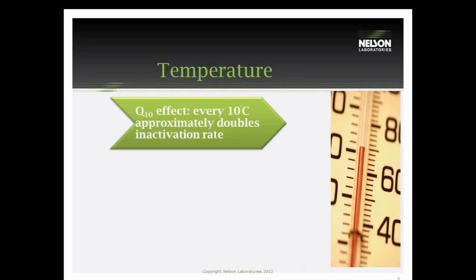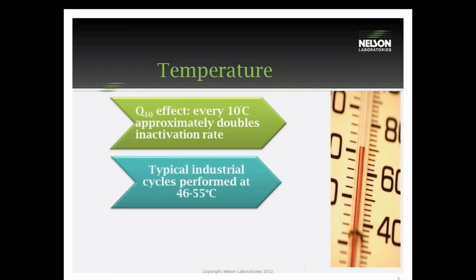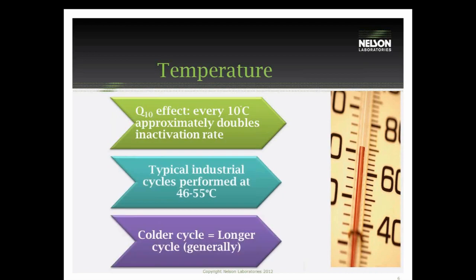Temperature has what we call a Q10 effect. For every 10 degrees that you increase the temperature, you approximately double the inactivation rate of the organism on the device. Typical cycles are between 46 and 55 degrees Celsius. We can sterilize at lower temperatures, but this generally is going to increase your EO dwell time and makes for a longer cycle.